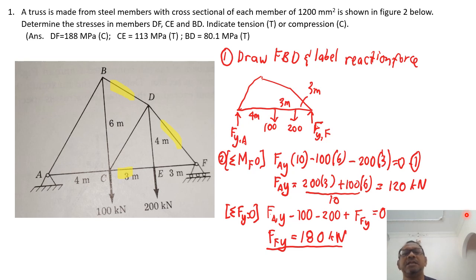And therefore, we get Fy equals to 200 plus 3 plus 100 times 6 divided by 10, and we get 120 kilonewton. And then we use the force equilibrium. So summation of Fy equals to 0. Then I can write Fy upwards, minus 100 downwards, minus 200 downwards, plus Ffy upwards, equals to 0. And from there, I get the reaction force for Fy and Ffy, 180 kilonewton. So this is just to solve the reaction force at both ends.